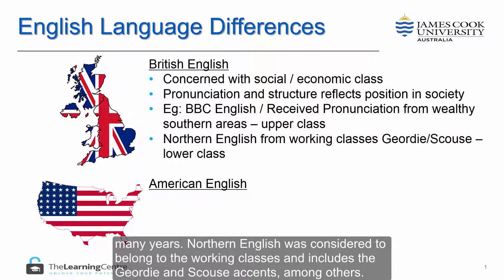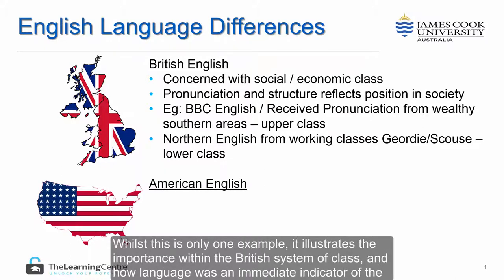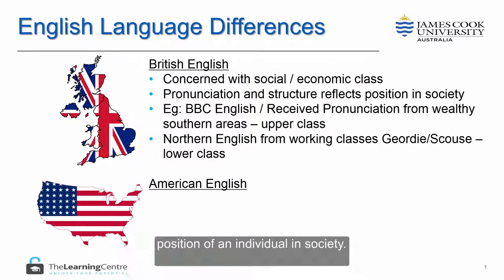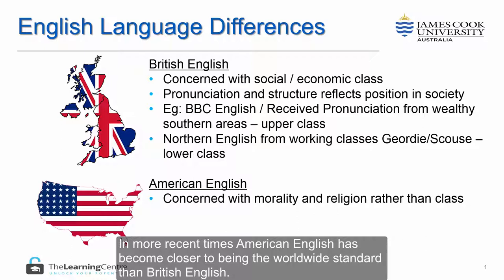Northern English was considered to belong to the working classes and includes the Geordie and Scouse accents, among others. This illustrates the importance within the British system of class, and how language was an immediate indicator of the position of an individual in society. There was also significant regional variation alongside these basic class differences.